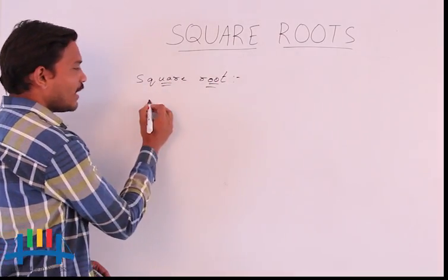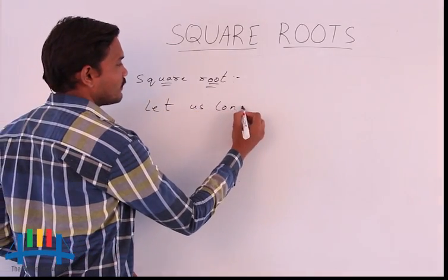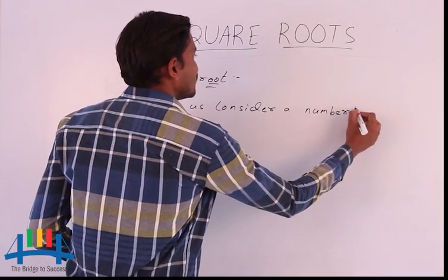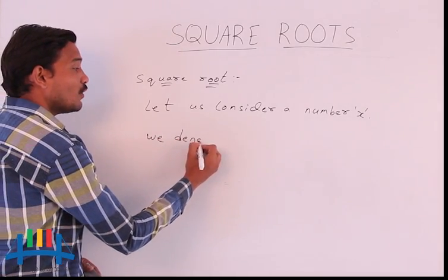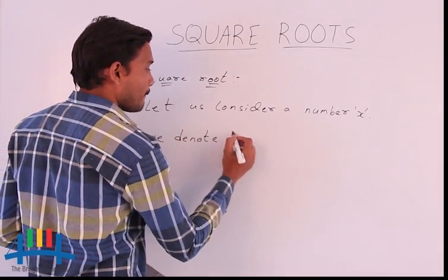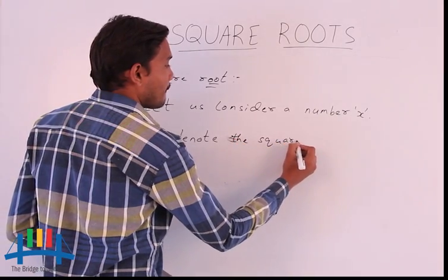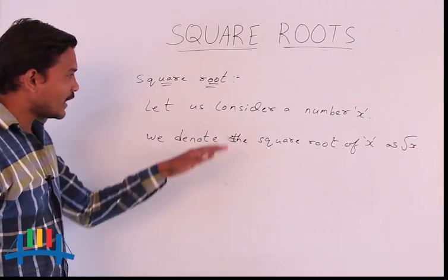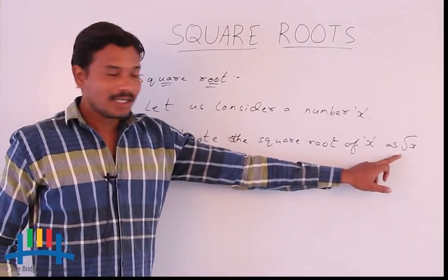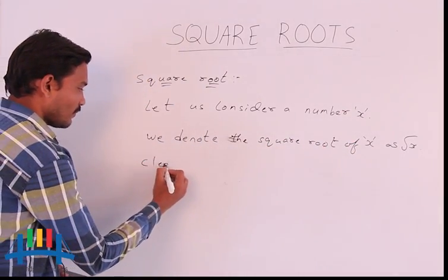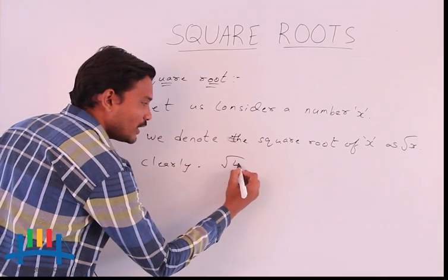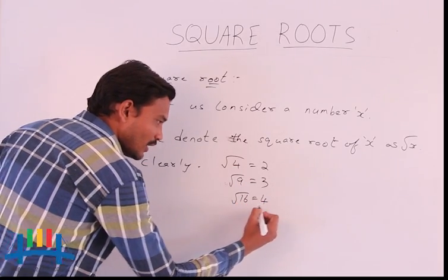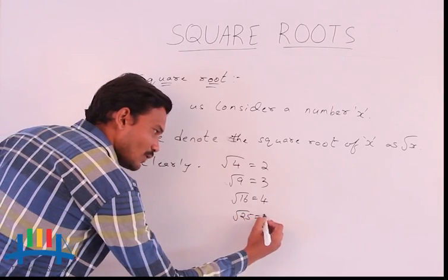To discuss this, let us consider a number X. We denote the square root of X as root X. Clearly, root of 4 is equal to 2, root of 9 is equal to 3, root of 16 is equal to 4, root of 25 is equal to 5, and so on.